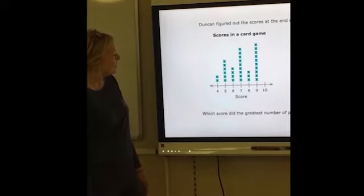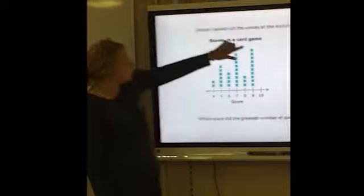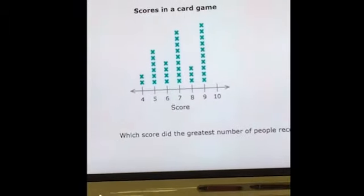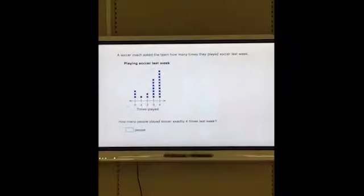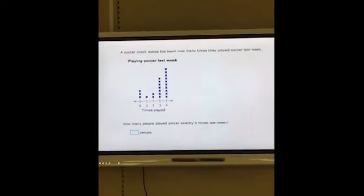And so if you look at it, you can see that the score that had the most or the greatest number of people was the ones that had a score of 9. So here let's look at another one. Again, always look at your data. See what kind of data is displayed.